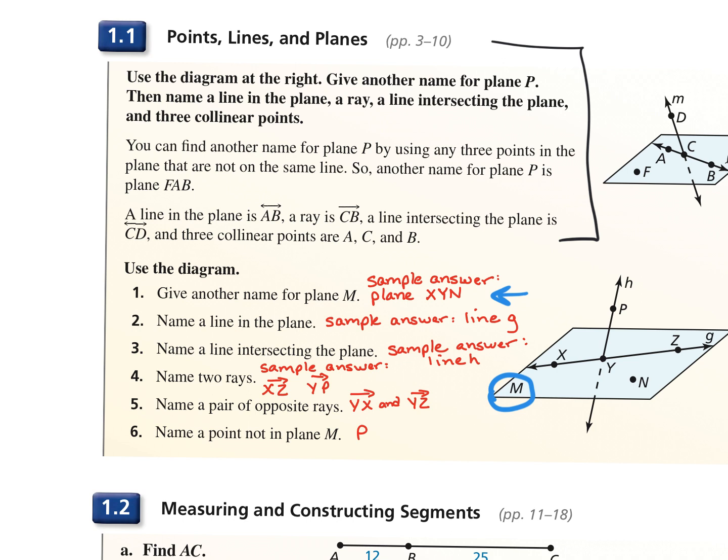What's important is you include the word 'plane' in front, because if you just put X, Y, N, I don't know if you're talking about points or a triangle. You need to include the description. You could have done that in any order, but you couldn't use point P.